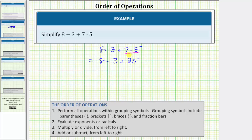Notice how it might have been tempting to perform the subtraction first because it's the leftmost operation, but this would not be correct. Notice how step four is to add or subtract from left to right. So we always multiply or divide from left to right before we add or subtract from left to right.